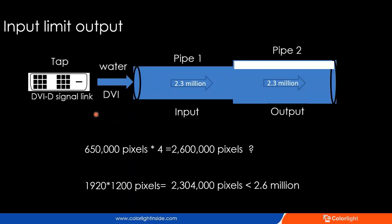Looking at these pictures: think of the DVI signal interface as a tap and the water as part 1. The water is scanned from there. The maximum resolution of a single-link DVI-D is 1920 by 1200 pixels. The output of the X4 sender — the total pixels across four outputs — is 2.6 million pixels. However, because the input resolution limits the output resolution, the loading capacity of the X4 and X6F is 2.3 million pixels.